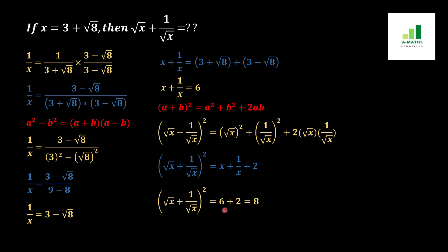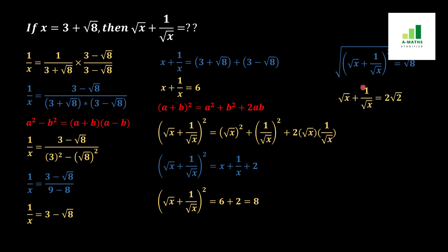Adding 6 plus 2 gives us 8. So (under root x plus 1 over under root x) squared equals 8. To find under root x plus 1 over under root x, we apply square root to both sides. The square and root cancel, and we get under root x plus 1 over under root x equals under root 8, which is 2 under root 2. So the final answer is 2 under root 2.